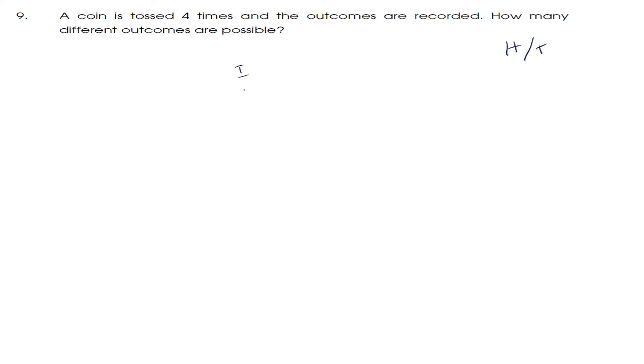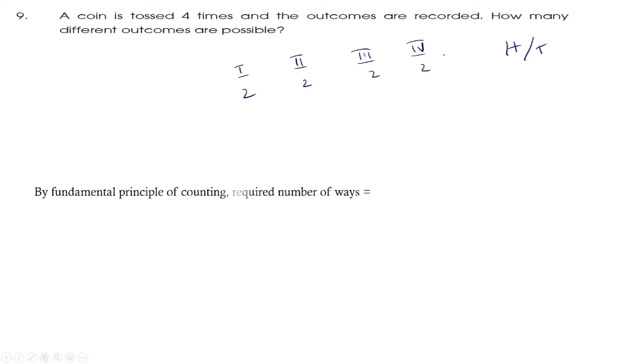Next question: a coin is tossed 4 times and the outcomes are recorded — how many different outcomes are possible? For a toss of a coin, we may either get a head or a tail. So for each toss we have 2 outcomes. The total number of different outcomes possible is 2 into 2 into 2 into 2, which is 2 raised to 4, equal to 16. So 16 outcomes are possible.